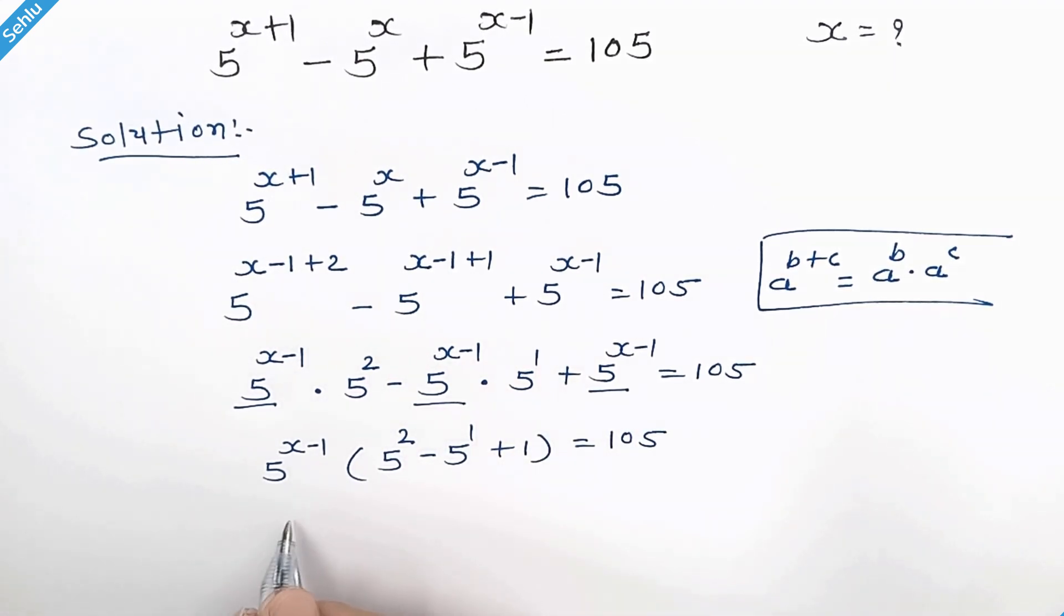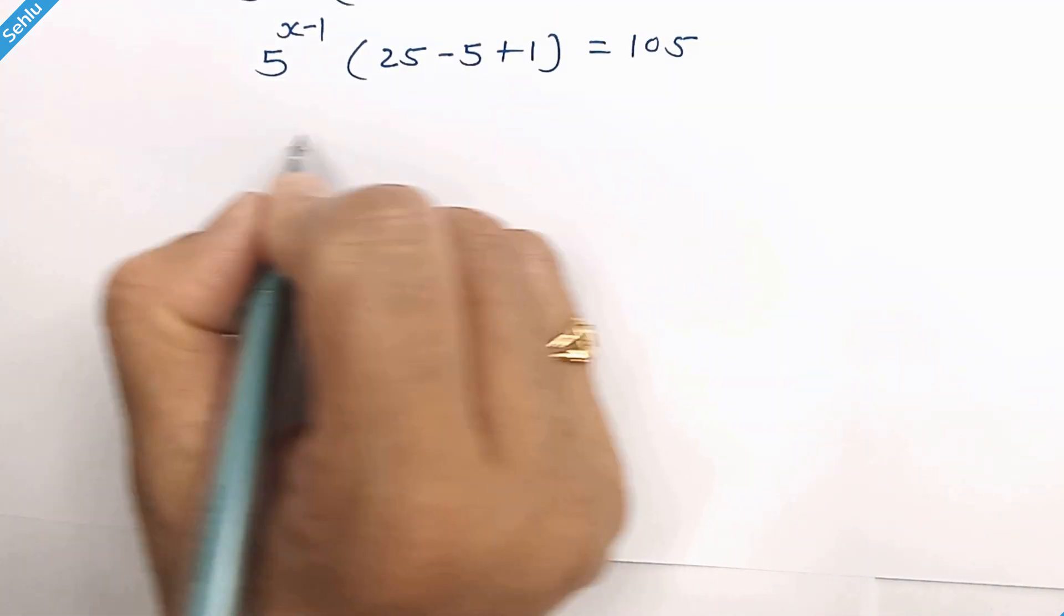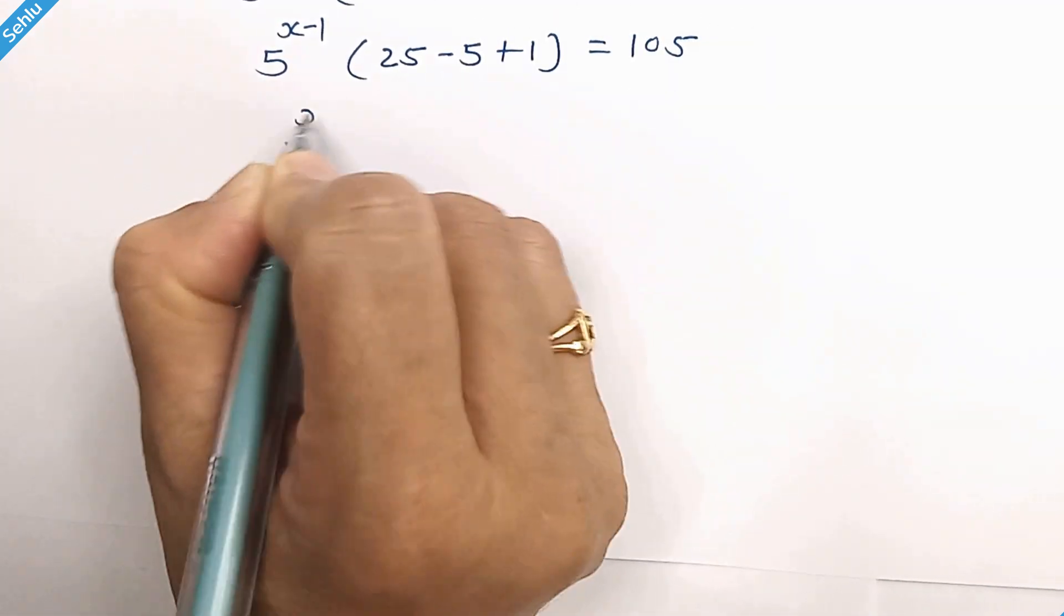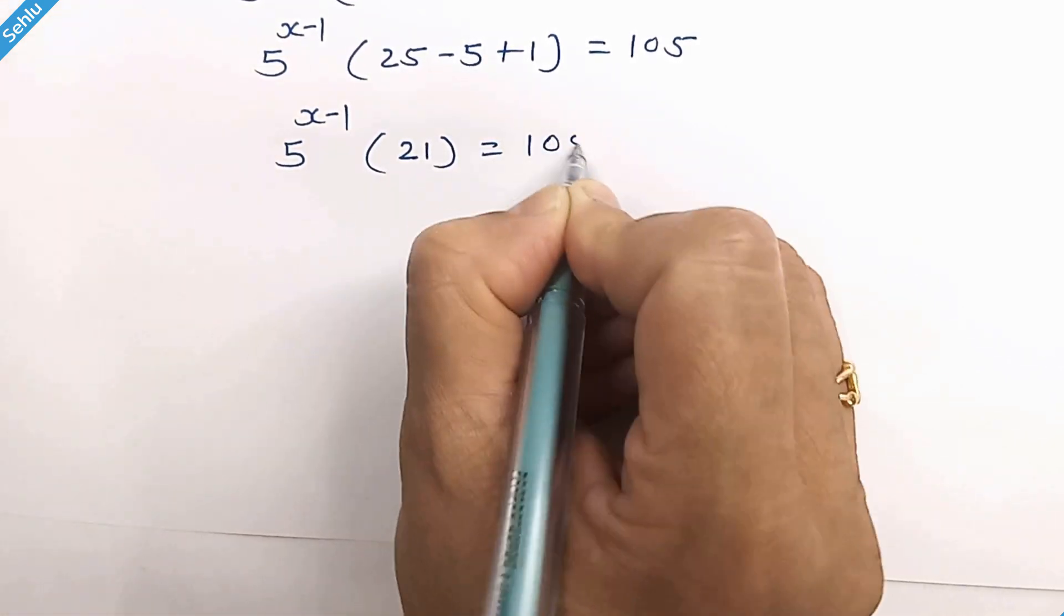Let's simplify this. So we have 5 to the power x minus 1 times 21 equals 105.